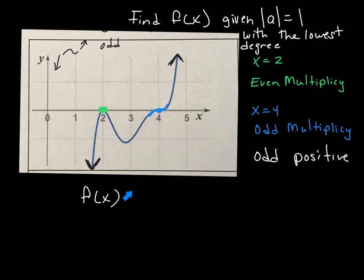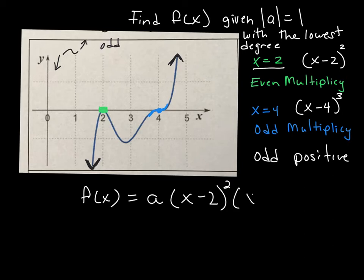So the very minimum we're going to have with this is, we don't know what a is yet, then we're going to have up here where x is equal to two, that turns into an x minus two, and that's going to be at least a degree two here, because it's an even multiplicity. And over here at x equals four, that turns into x minus four, and that has an odd multiplicity. So at a minimum, that's going to need to be a three. And because this is positive, we're just going to call that a to be one right now.